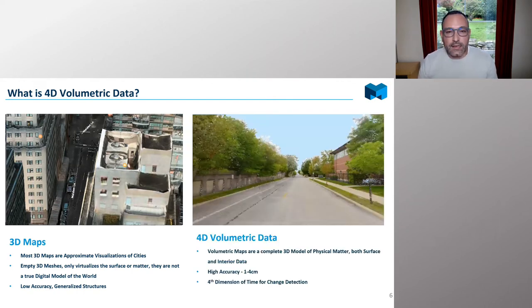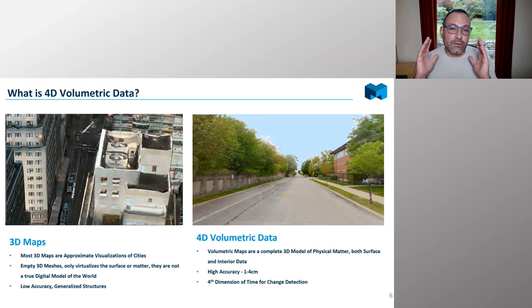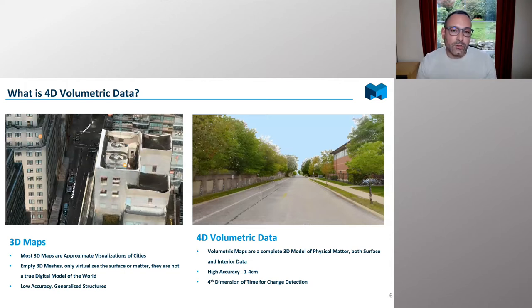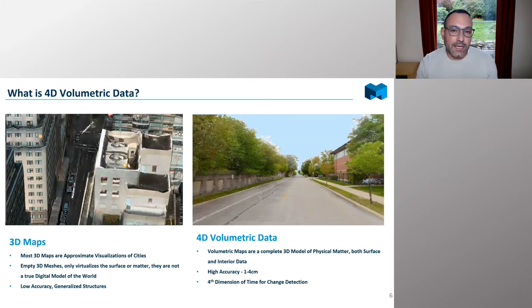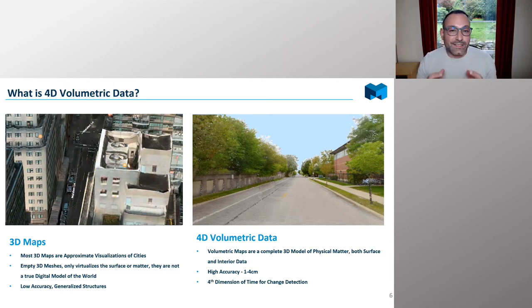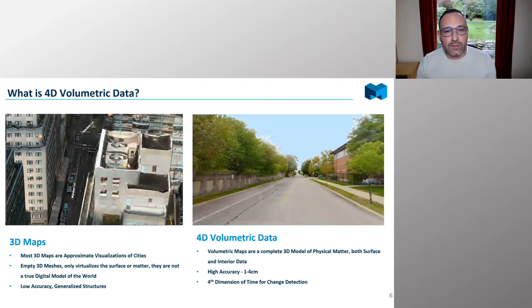Volumetric mapping is very different. We use voxels, which I'll introduce shortly. Essentially, we're able to map not only the physical surfaces of cities, but also the interior information in the same model. It's designed so data can be automatically collected, automatically processed, and dropped straight into the model — enabling real-time updates without a lot of pre-processing, while still maintaining very high accuracy of one to four centimeters, and adding a fourth dimension of time to do things like change detection.